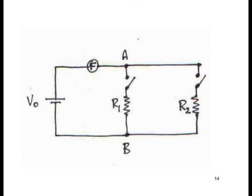There's also a fuse, capital F, in the main line of the circuit, and two junctions, A and B on the top and bottom of the branch leading to the first resistor.